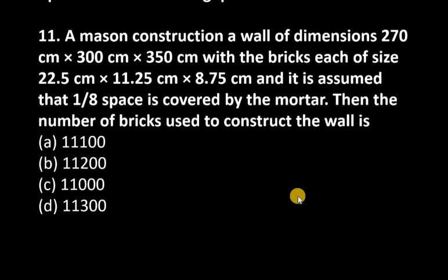Now notice that the wall is cuboidal and the brick is also cuboidal. Let us take wall dimensions as L, B, and H, and brick dimensions as L1, B1, and H1. So our wall's length is 270 cm,